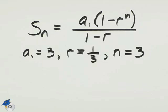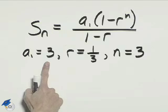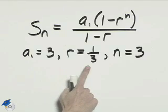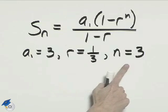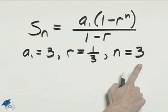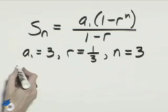We're going to find the value of S sub n in this equation by substituting 3 for A sub 1, substituting 1 third for r, and substituting 3 for the variable n.